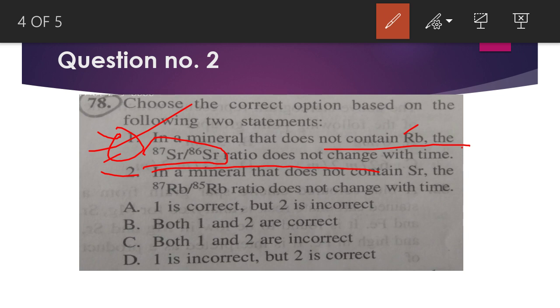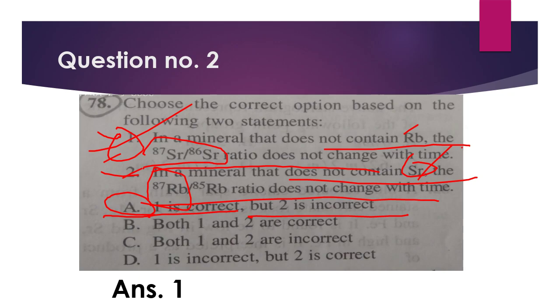Now second statement: in a mineral that does not contain strontium, the 87Rb/85Rb ratio does not change with time. This is wrong. Strontium is present or strontium is absent, but disintegration of rubidium does not depend on strontium. If there is any rubidium, it will definitely convert into strontium. So second is wrong. Thus option A will be your right answer, that first is correct but second is incorrect.